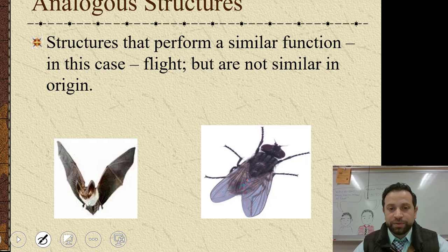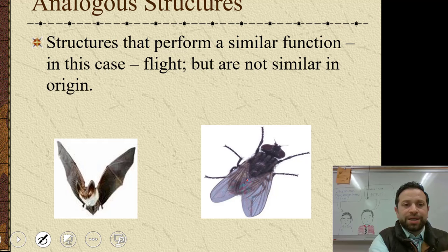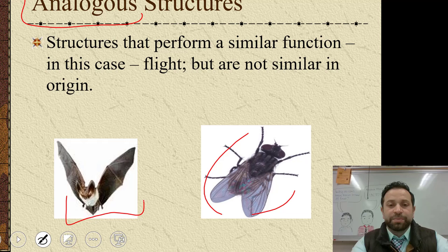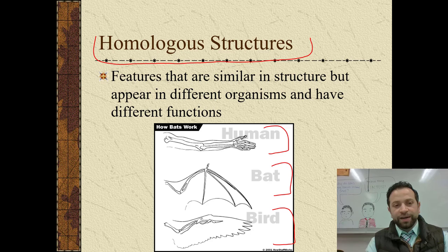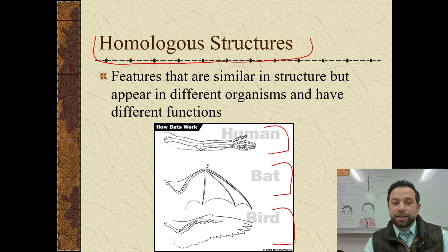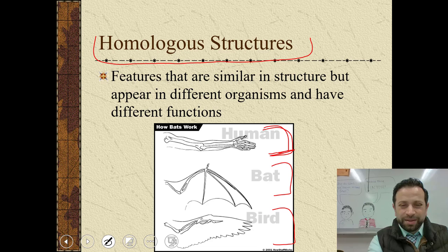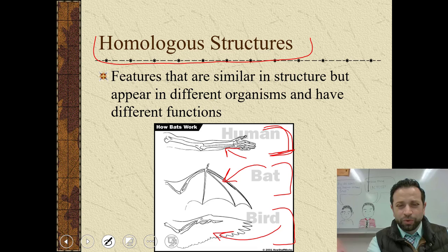Analogous structures — like an analogy — are structures that perform a similar function. A fly and a bat both have the ability to fly, but they're not similar in their origin. Finally, homologous structures, as opposed to analogous structures, are similar in structure but appear different and have different functions. For example, the bone structure in the human arm is similar to the bones of a bat wing or a bird wing — they come from the same evolutionary origin but all have different functions.